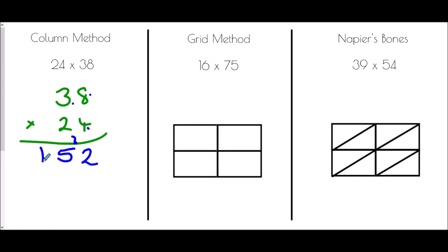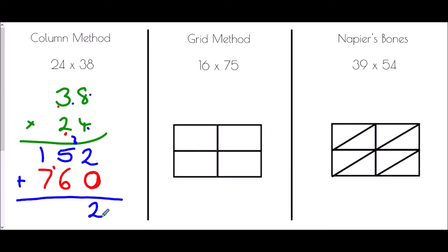This is where the column method occasionally has a few problems — people miss this one step. The next number we are multiplying is the 2, but that 2 is actually representing 20. Because it's a tens digit, we must straight away write down a 0, because it's actually 20 times 8 not 2 times 8. So 2 times 8 is 16 — write 6, carry 1. Then 2 times 3 is 6, plus 1 is 7. Adding the two rows: 2 plus 0 is 2, 5 plus 6 is 11, 1 plus 7 plus 1 is 9. So 24 times 38 is 912.